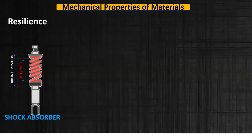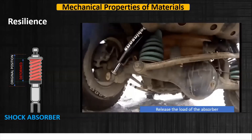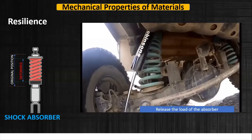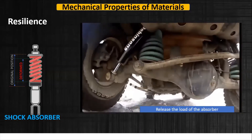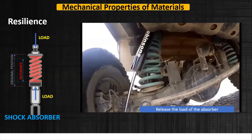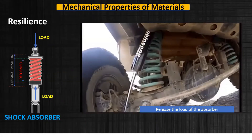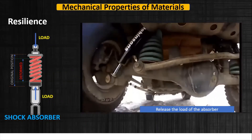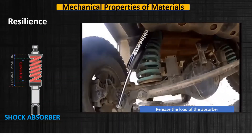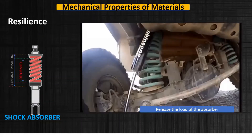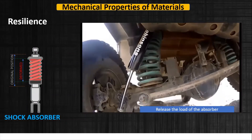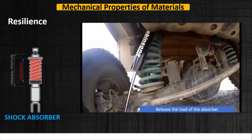To understand resilience, let's take an example of a shock absorber. When the shock absorber is subjected to some load, it gets deformed and some energy gets stored in it. When we release the load, the absorber comes back to its original shape without creating any permanent deformation.